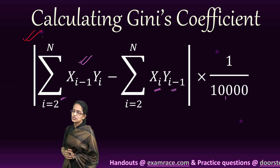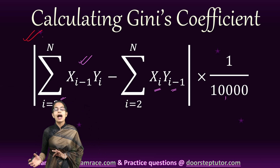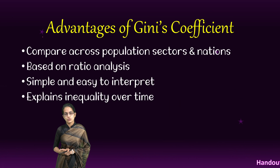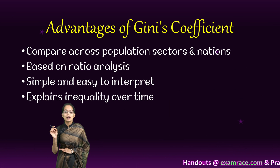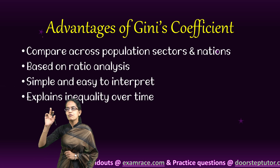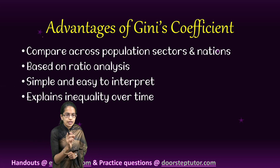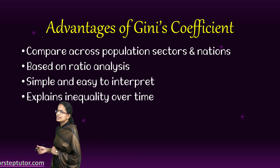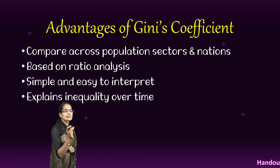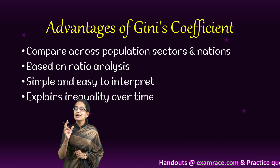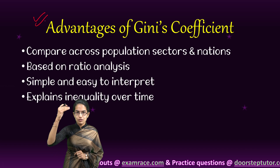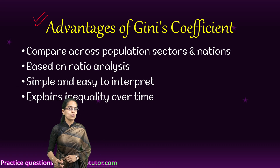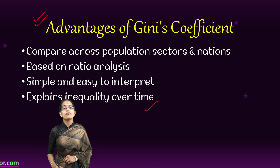Anything we use has its own advantages and disadvantages. The Gini coefficient is important because we can compare across populations and across nations. It is also based on ratio analysis, and since the values lie between 0 and 1, it is very simple to interpret. More importantly, since we are taking values at different points in time, we are able to analyze the inequality and changes in inequality over time.